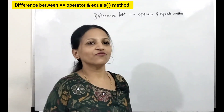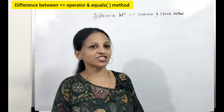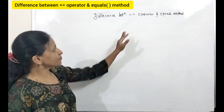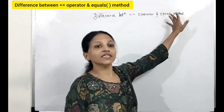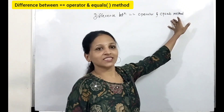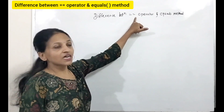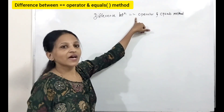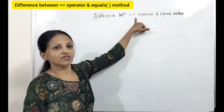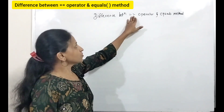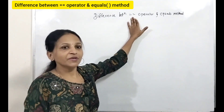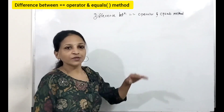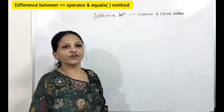Hello students, I am again here with one more important question for your Java interview preparation. What is the difference between equality operator and equals method in Java? This is the equality operator — you can also call it a comparison operator or relational operator. This is used to check equality between two objects, and we can also use this operator with primitive data variables.